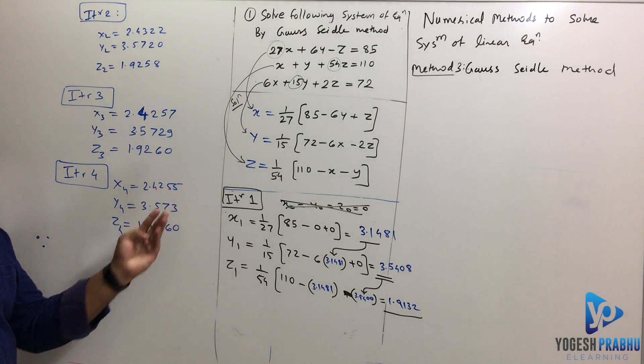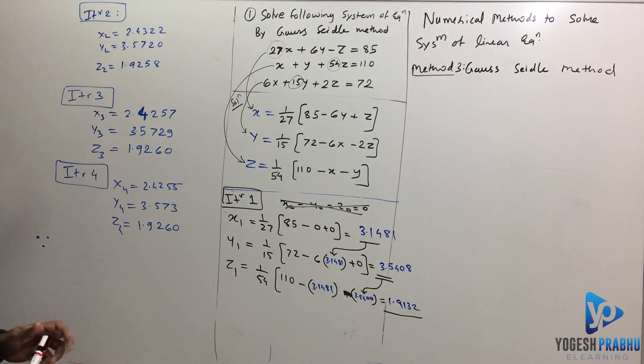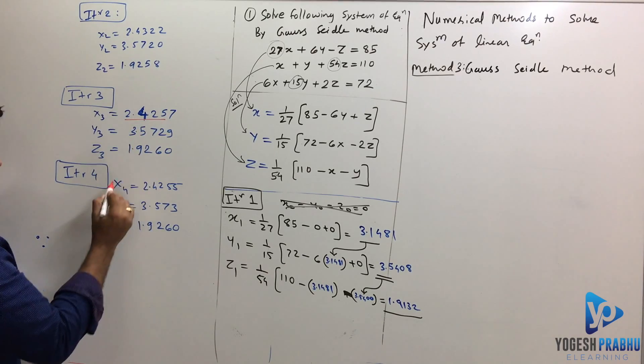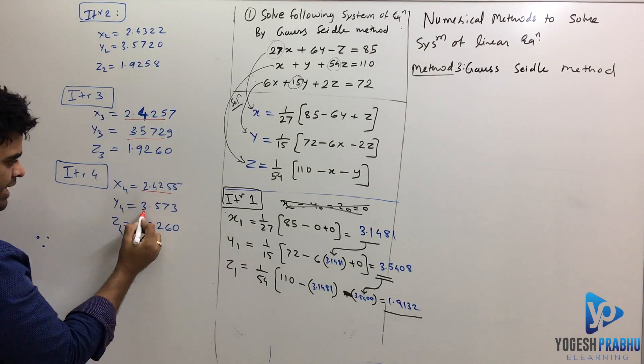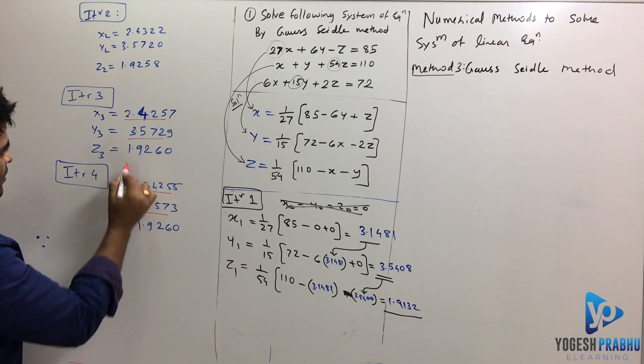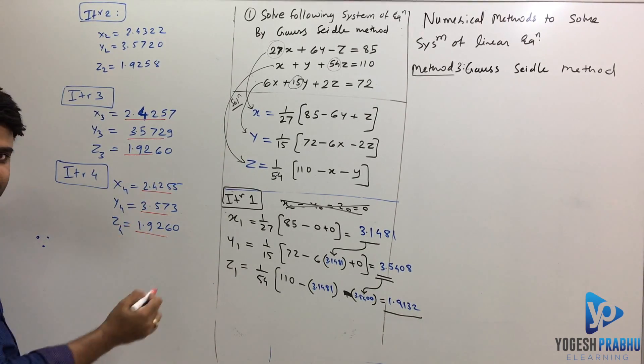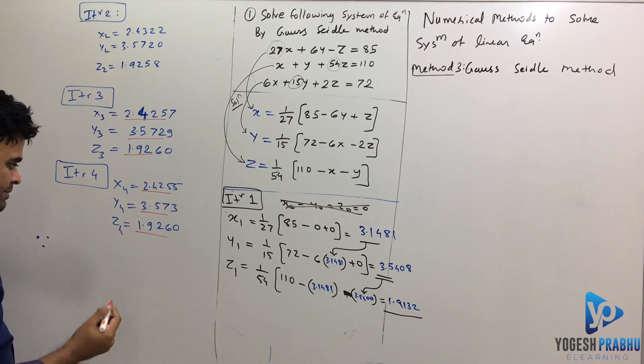You get the correct values up to the four values after the decimal point and if you see that iteration 3 and iteration 4 has got similar values of x, y almost same and z as well, so you at least make sure that it's correct up to two values after a decimal point.